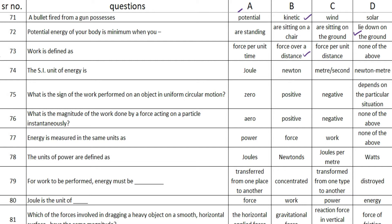The next one is: the SI unit of energy is blank — and the correct option is option A — joule. The next one is: what is the sign of the work performed by an object in uniform circular motion? The answer is option A — zero.